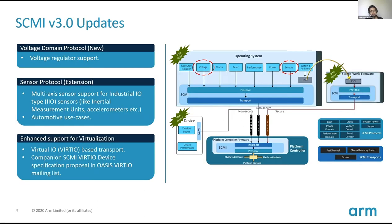Moving to SCMI v3. We are coming up with a new version of the specification. The one currently on ARM Developer is SCMI v2. The v3 has not yet been released, but I'll provide a small snapshot of what has been added. I've copied a diagram from the SCMI specification and you'll see two parts highlighted in red. That is the voltage domain — a new protocol we have added called the voltage domain protocol.